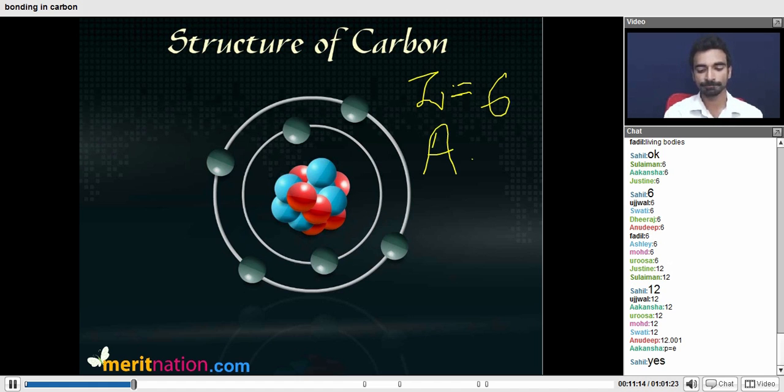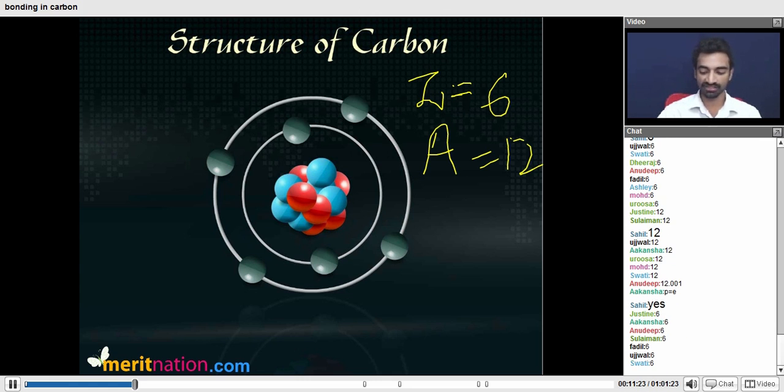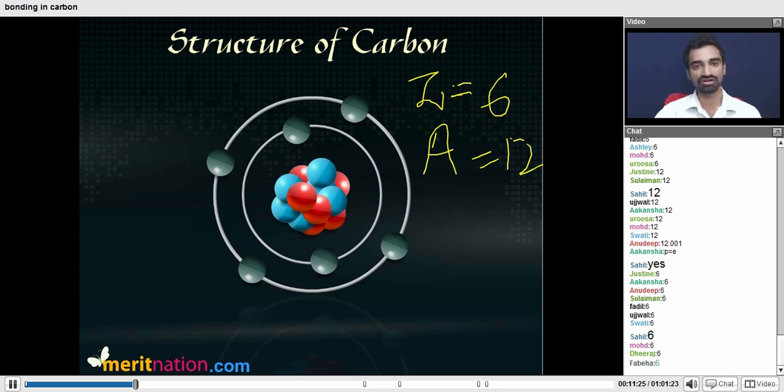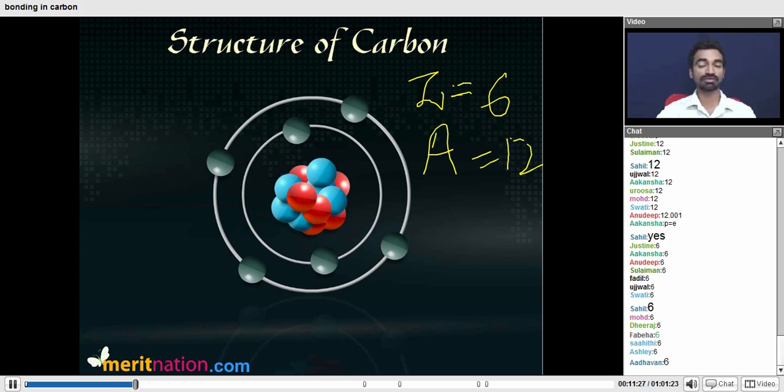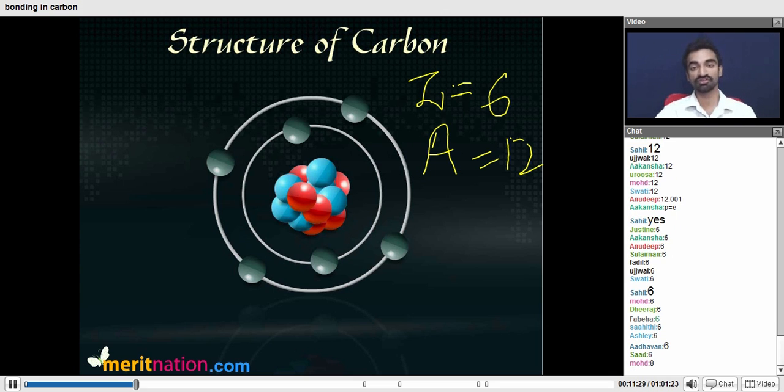How many electrons are there? How many electrons do I see here? Six, exactly. So in a neutral carbon atom, the number of electrons would be exactly equal to the number of protons.